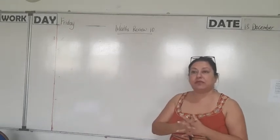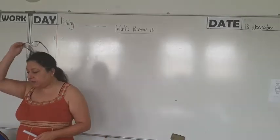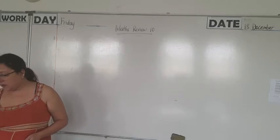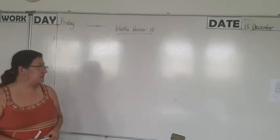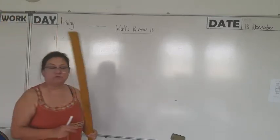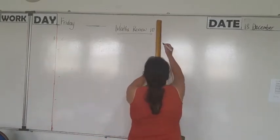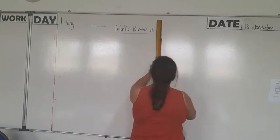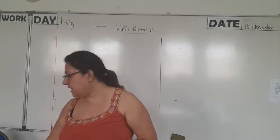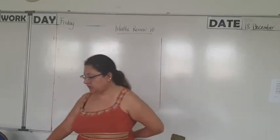I'm going to read the first word problem — number one on Review 10. The capacity of a tank is 5000 ml. There is 1670 ml of water in it. How much more water must be added to fill the tank completely? So the capacity is 5000 ml, there is 1670 ml of water in the tank, and we need to find how much more water must be added.